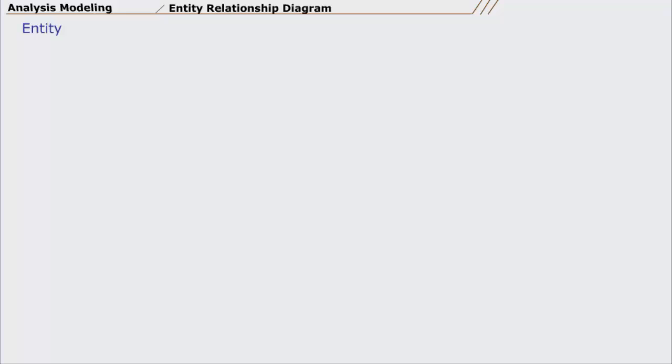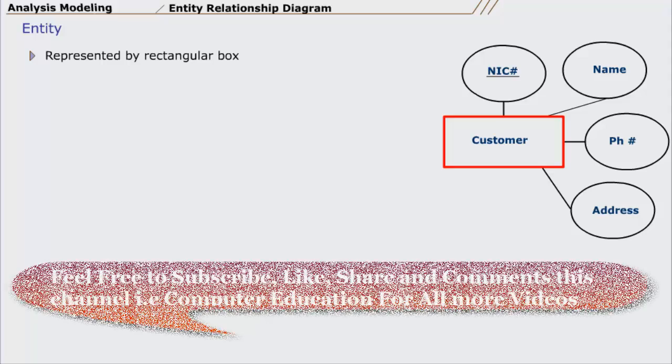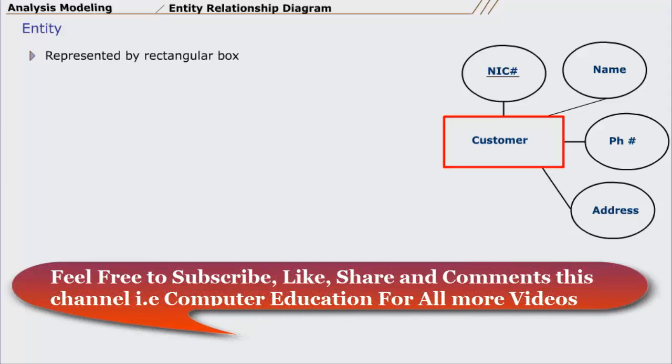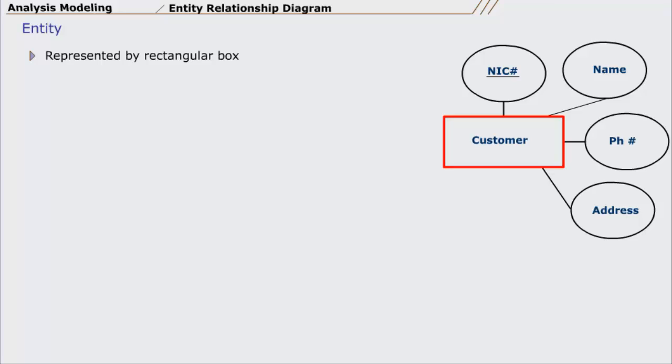An Entity is represented by a rectangular box on an Entity Relationship Diagram. It represents a collection or set of objects, things in the real world whose individual members or instances have the following characteristics.